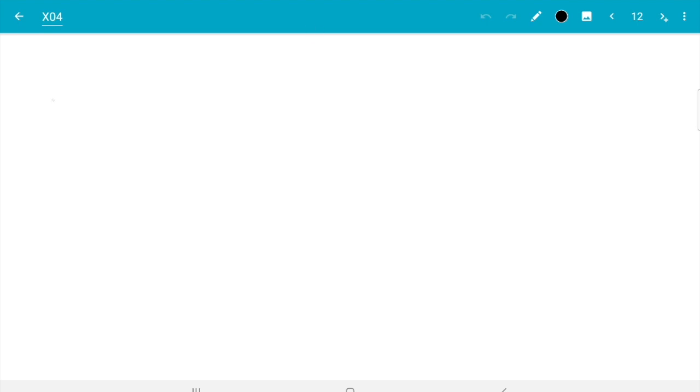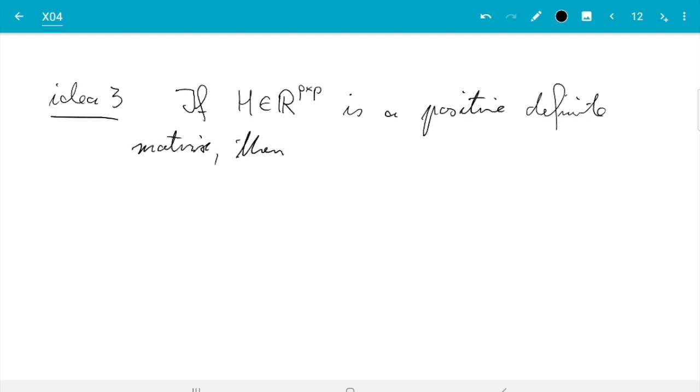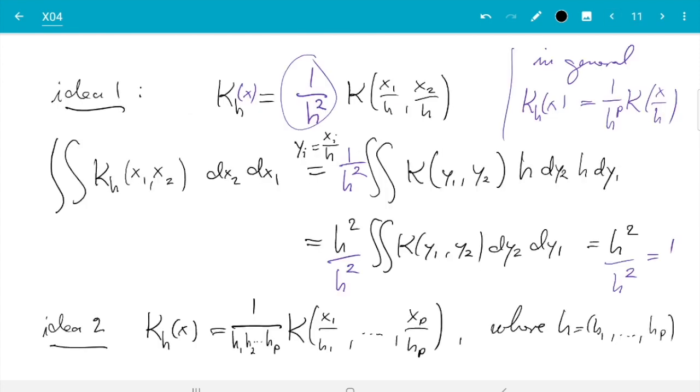And you can go one step further - namely, instead of taking numbers, you can multiply the vector with the matrix. So idea three: if H in R^(p×p) is a positive definite matrix, then one can use K_H(x) equals something times K, and now we are not dividing by h but instead we do H^(-1) of x. Before I didn't speak too much about this - these numbers h, the bandwidth, that is positive numbers, so dividing by h is not a problem. And also we should avoid negative numbers because that flips over the K and can lead to all kinds of surprises.